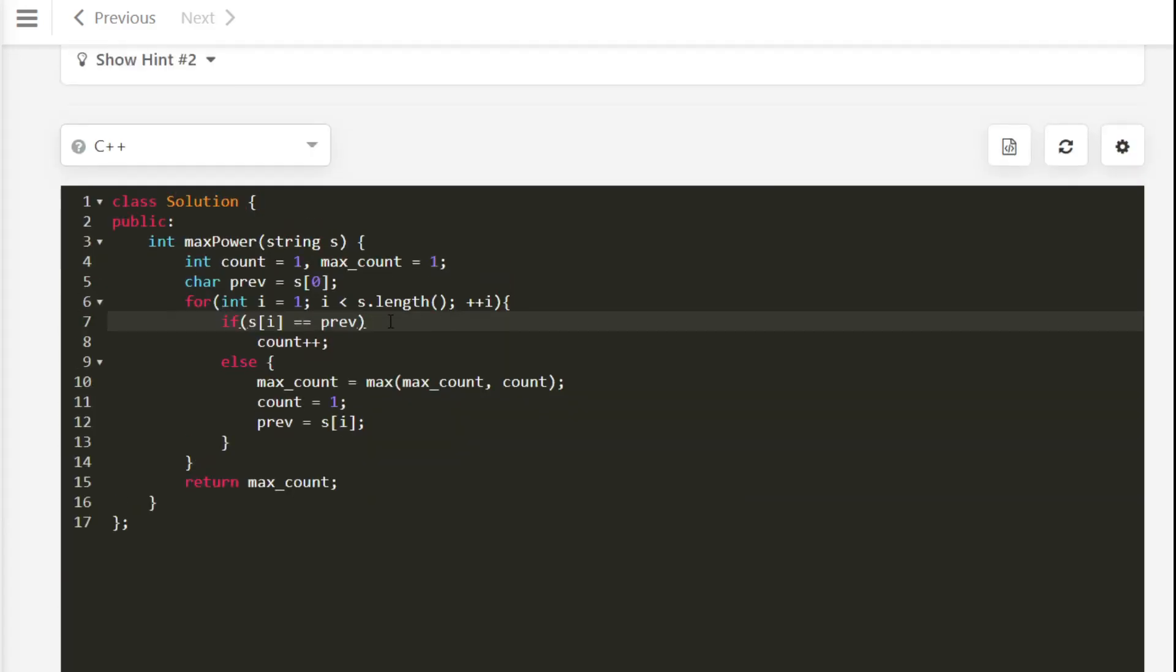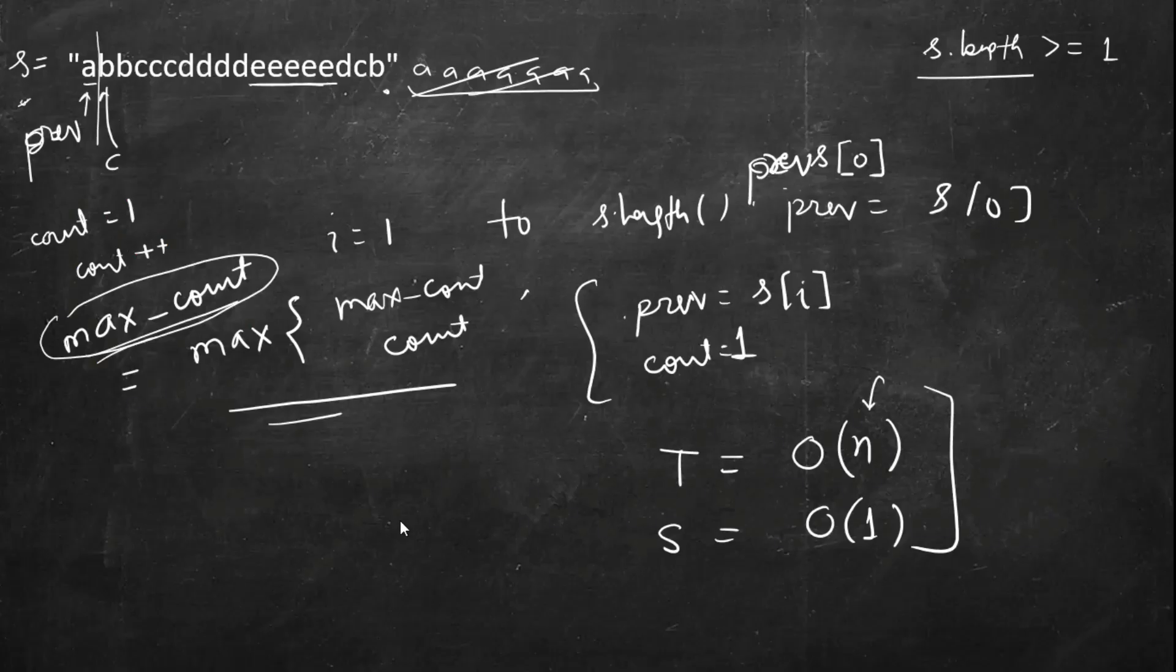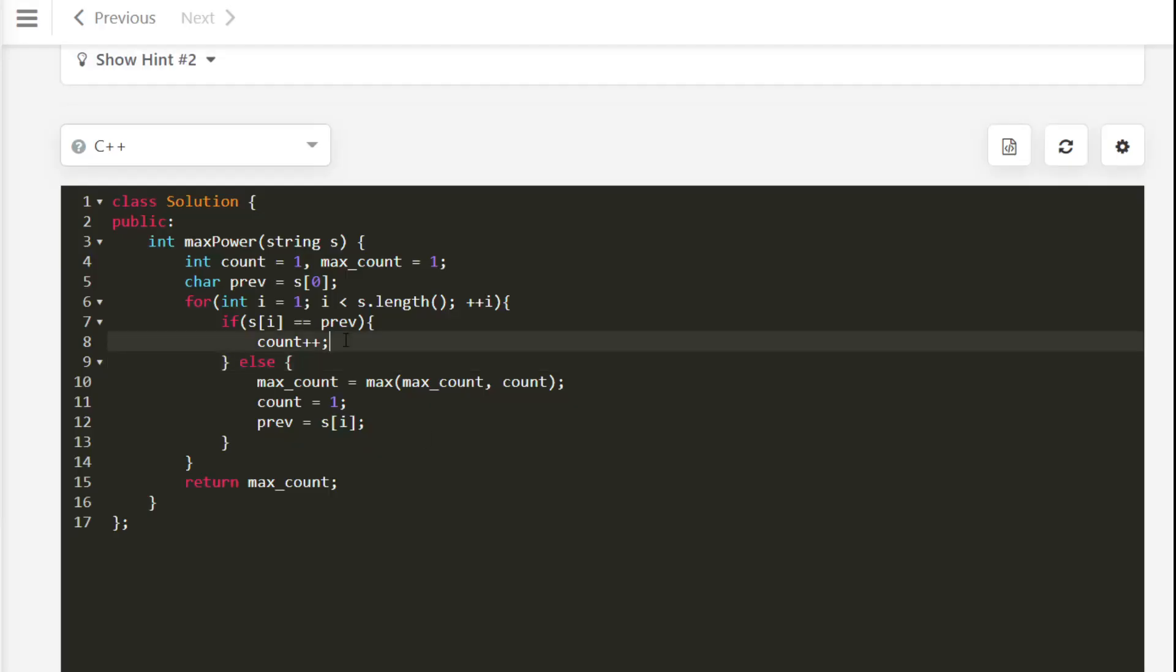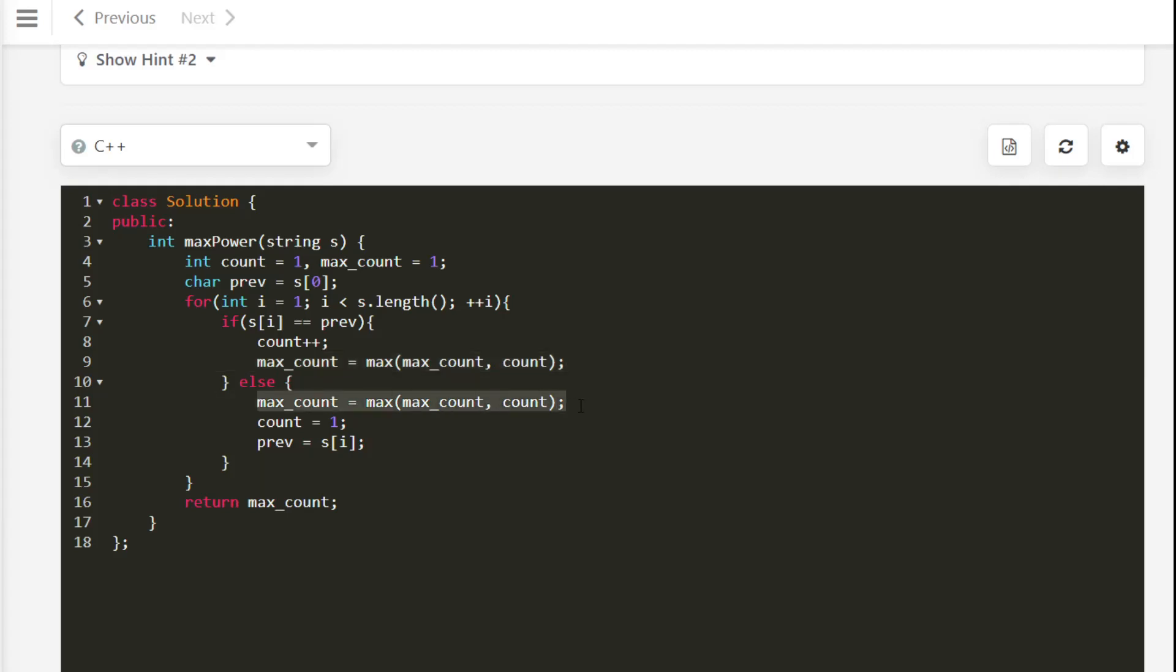And we got a wrong answer. So if we don't encounter, even if we don't encounter a new character, we have to update for the case where last character is part of the solution, so we missed this. Like a b c c c c, we will never encounter a new character, so we should - let me correct my solution. We should put this here only, so after each count, or you can handle the last index separately. So get rid of this from here. And now let's submit it again.